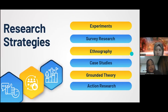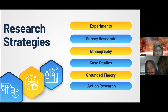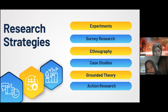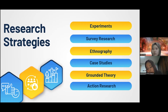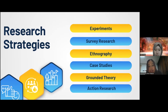The first research strategy is experiment, which is often linked with a hypothetical-deductive approach to investigate causal relationships between variables. The second is survey research, which presents a means of acquiring insight into individuals' knowledge, attitudes, and behaviors. The third is ethnography, which originates in anthropology and involves closely observing and immersing oneself in the daily life of a particular culture or social group.